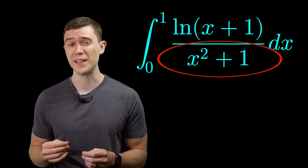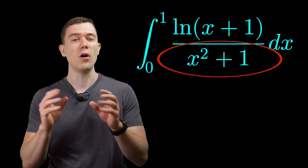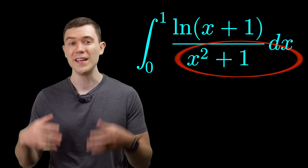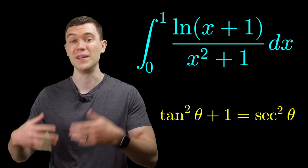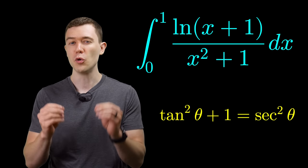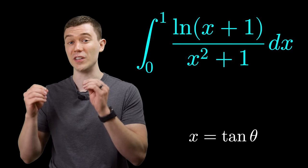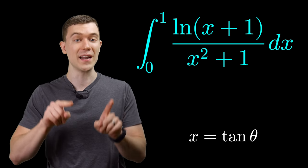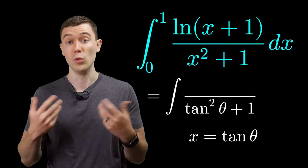See that x squared plus one in the denominator? That looks an awful lot like the trig identity, tangent squared plus one is secant squared. So if we let x equal tangent theta and substitute that into the denominator, we'll get that identity.